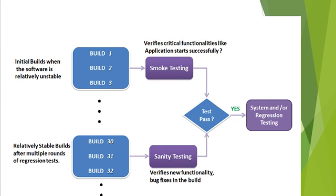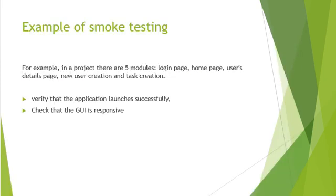Once smoke testing passes, it will go forward for further system and regression testing. In sanity testing, we are testing stable builds — that is, after multiple rounds of regression tests, once the build becomes stable. Sanity testing verifies the new functionality and bug fixes in that build. Once it passes, we proceed to regression and system testing.